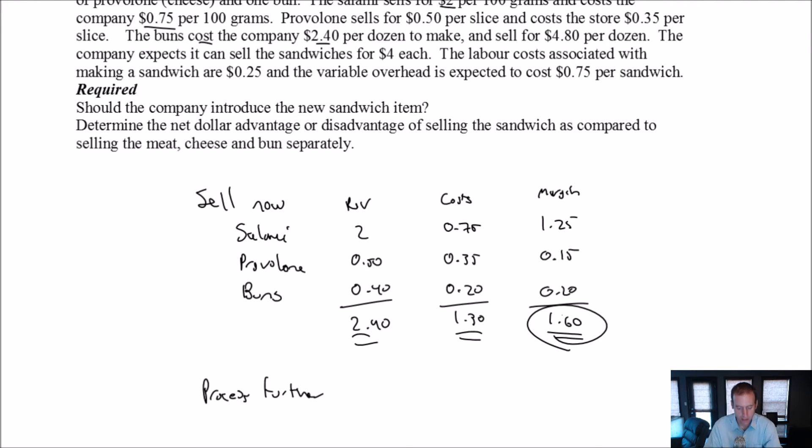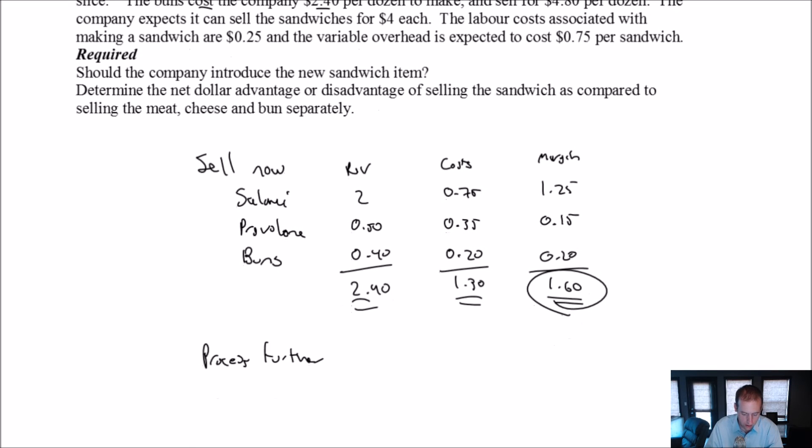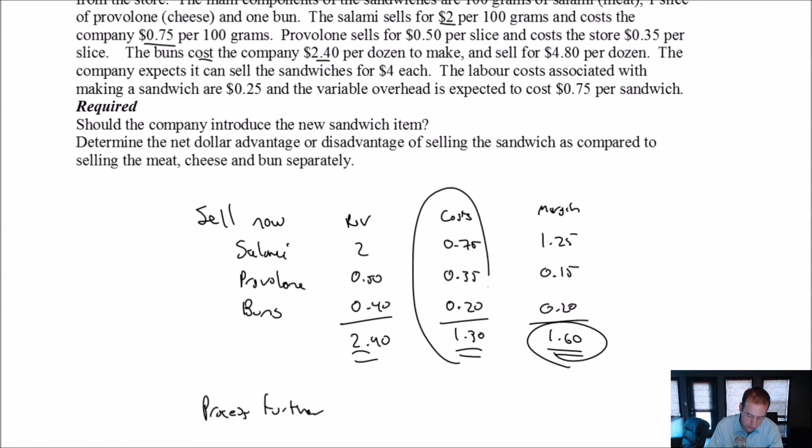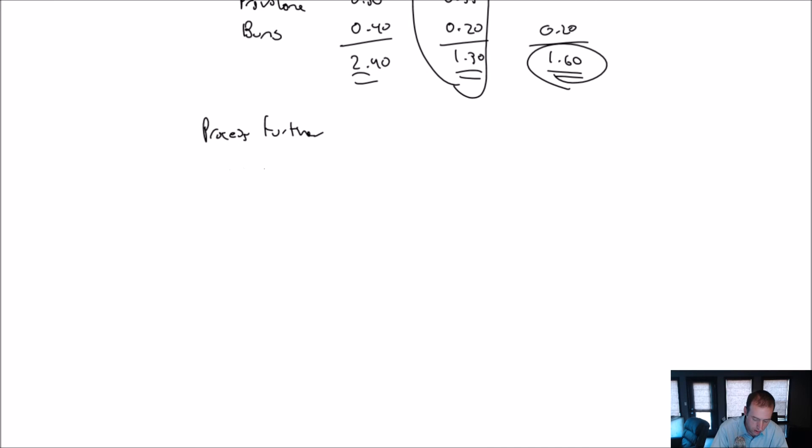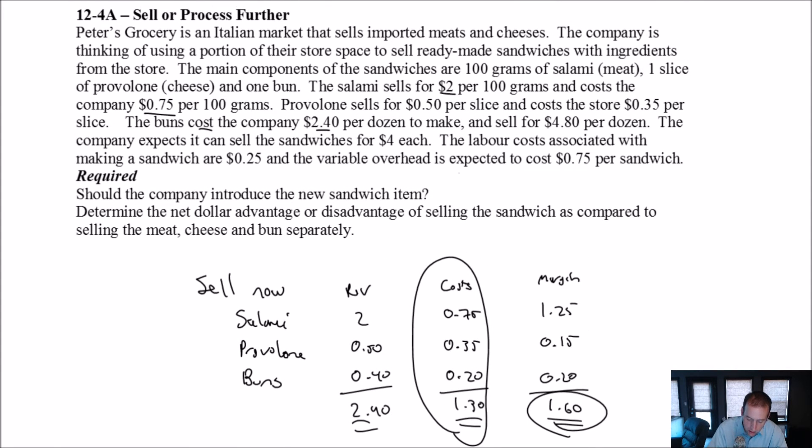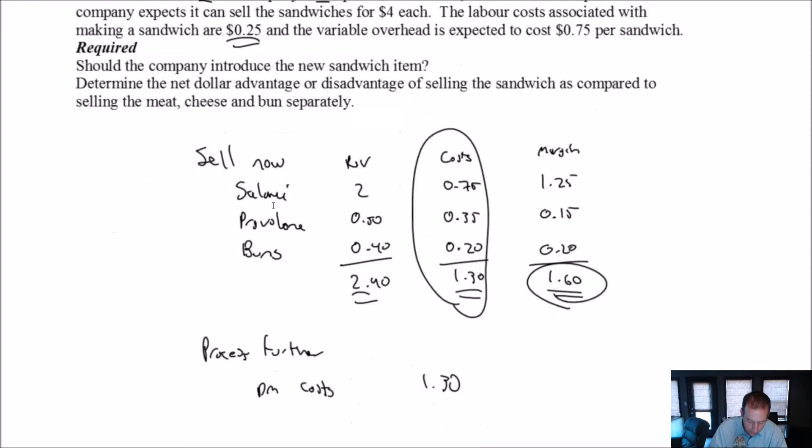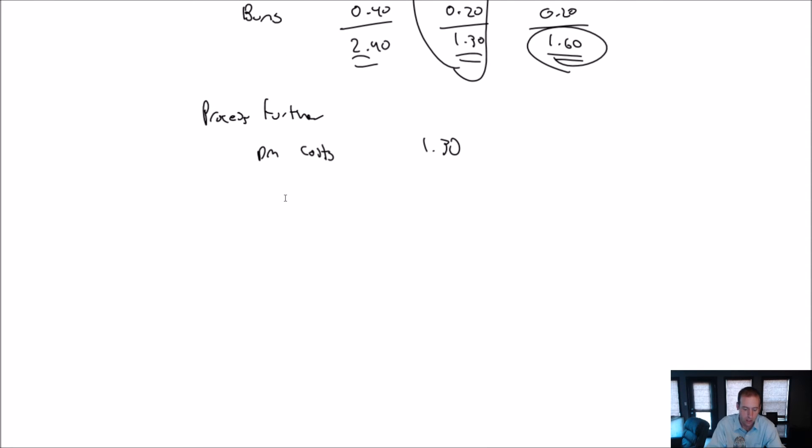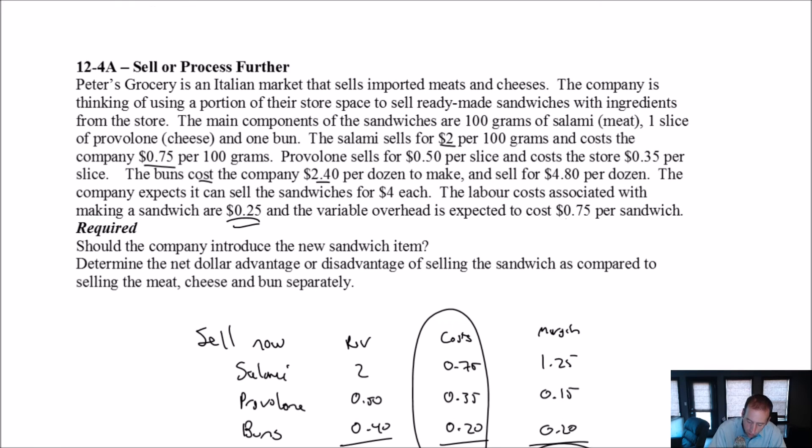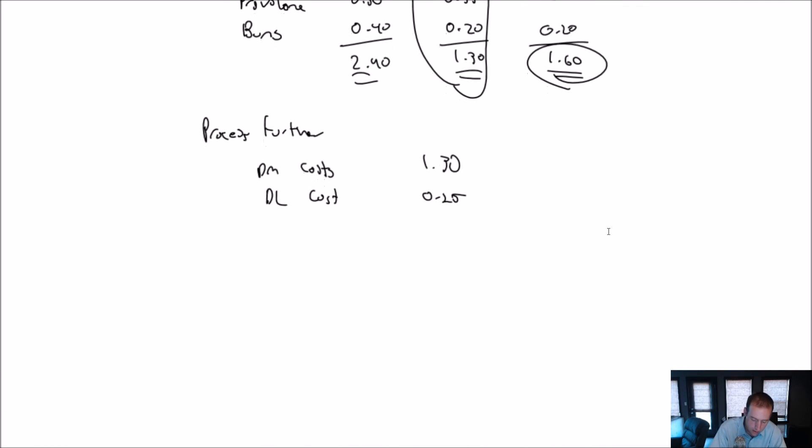If I process it further and make a sandwich out of it, and if all these estimates are reasonable, here's the cost associated with processing it further. Of course, we have all this material cost. All these materials are coming forward, right? It still costs me 75 cents of salami, 35 cents of provolone, and 20 cents of bun. So I'll just call this material costs $1.30. Those are coming forward. It's going to cost an additional 25 cents in labor because somebody's got to put together the sandwich. So additional direct labor costs, 25 cents. And the variable overhead costs here are expected to be 75 cents.